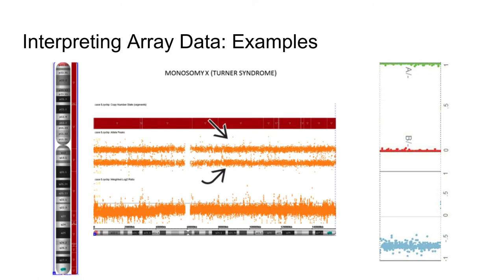In this example, the log2 ratio for the entire chromosome hovers below zero at around negative 0.5, indicating a monosomy — in this case, monosomy X in Turner syndrome. The allelic tracks only display hemizygous A and hemizygous B. Since the complementary X chromosome is absent, you cannot have a second partner at the individual SNP loci.